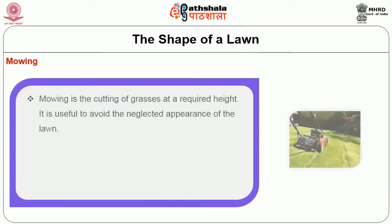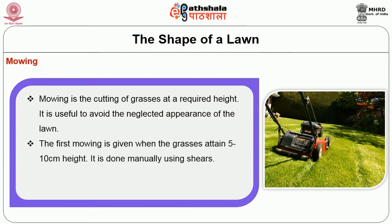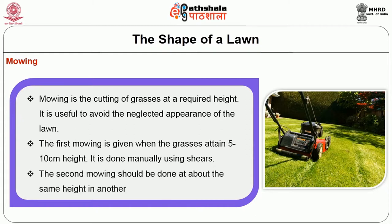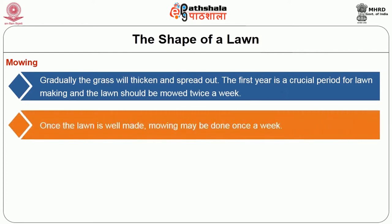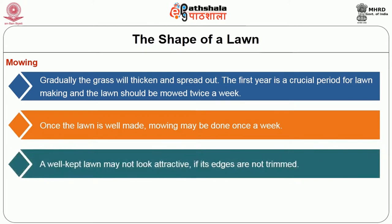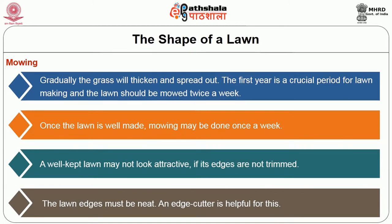The next step is mowing. Mowing is the cutting of grasses at the required height. It is useful to avoid the neglected appearance of the lawn. The first mowing is given when grasses attain 5 to 10 cm height, done manually using shears. The second mowing should be done at about the same height after another 3 to 4 days. Gradually the grasses will thicken and spread out. The first year is the crucial period for lawn making and the lawn should be mowed twice a week. Once the lawn is well made, mowing may be done once a week.